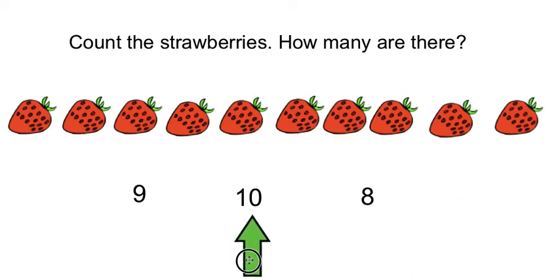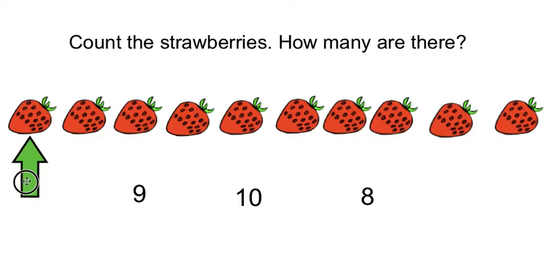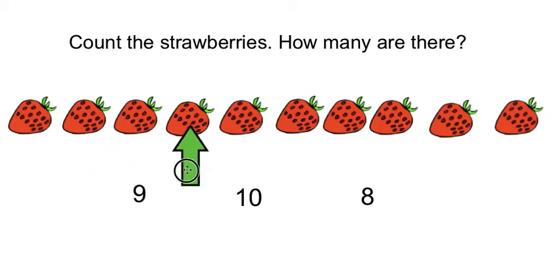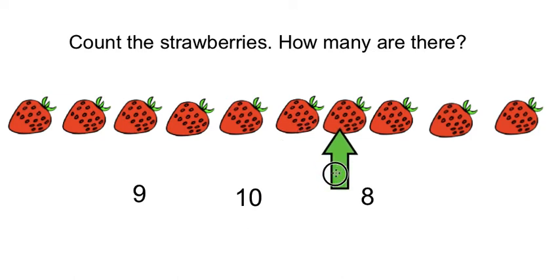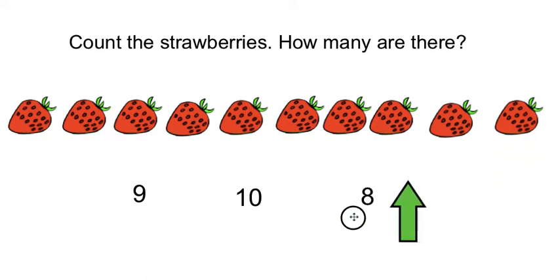Point to number 10. Good job — there are 10 strawberries. Let's double check our work. This time I want you to point to the strawberries as I count and count with me. Ready? 1, 2, 3, 4, 5, 6, 7, 8, 9, 10. Good job, there are 10 strawberries.